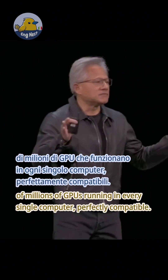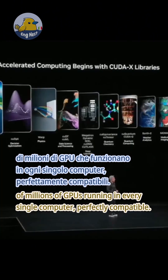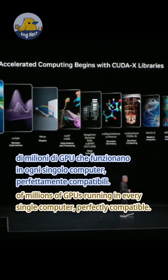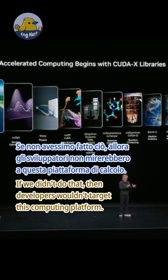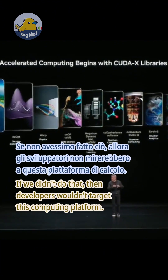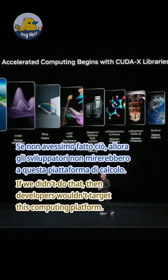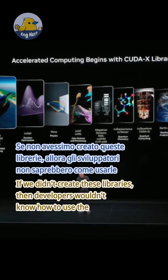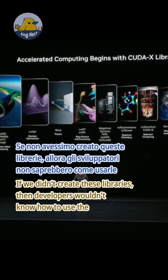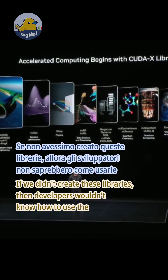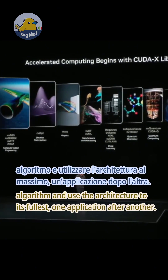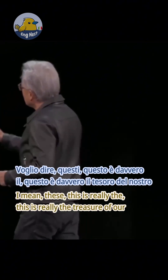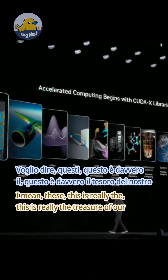Hundreds of millions of GPUs running in every single computer, perfectly compatible. If we didn't do that, then developers wouldn't target this computing platform. If we didn't create these libraries, then developers wouldn't know how to use the algorithm and use the architecture to its fullest, one application after another.